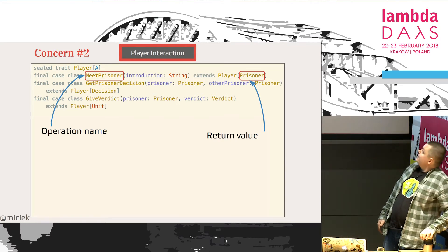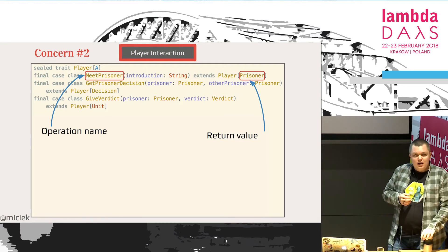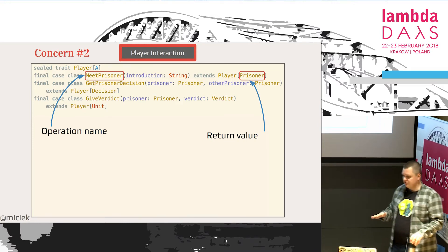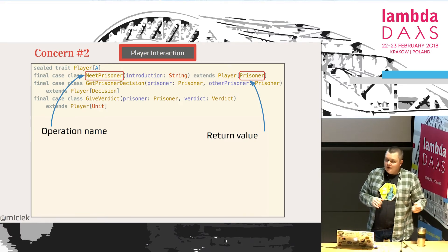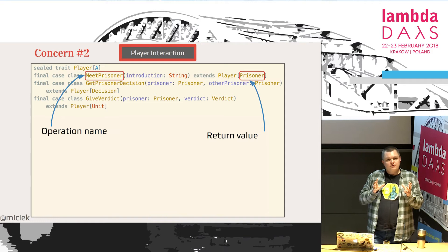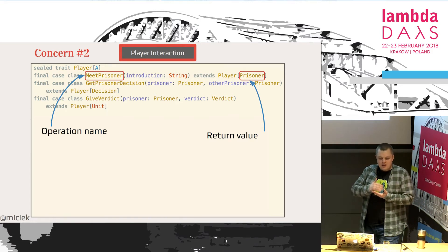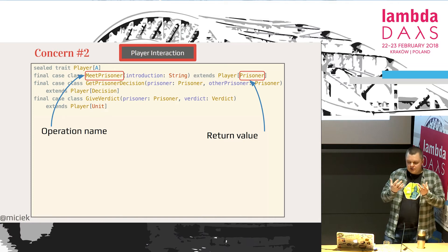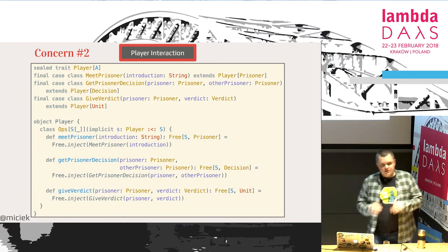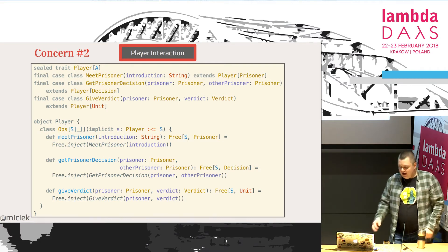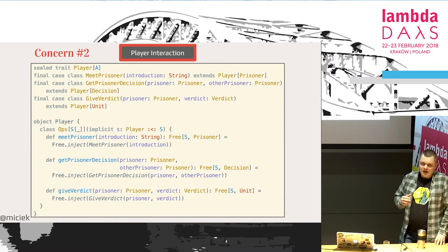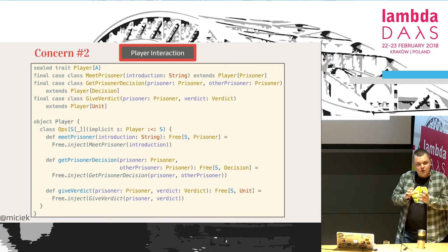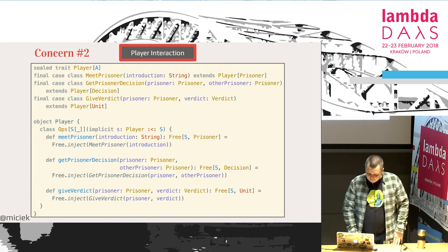Then player interaction — this is where it gets crazy. This is how we encode free operations, free algebras in Scala using the cats library — the simple functional programming library for Scala. We have a trait Player, which is the name for the set of operations. And we have three final case classes implementing PlayerOperation. You can read the class name as the name of the instruction. Player is parameterized by a type — in MeetPrisoner, that type means when the instruction gets executed it will return a Prisoner.